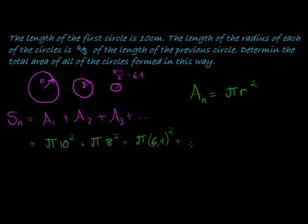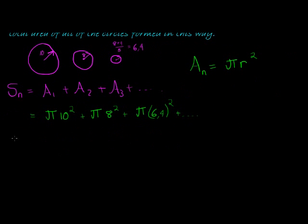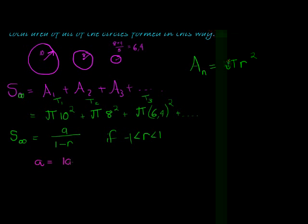So if we want S of infinity, we need to find the first term divided by 1 minus r, and if r is indeed less than 1 and greater than negative 1. So let's go calculate r. Let's do our stock taking. We want S of infinity. We have the first term, that's pi times 10 squared, which is 100 pi.